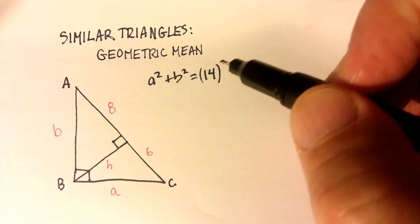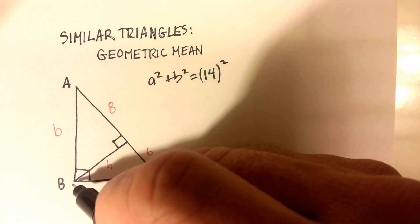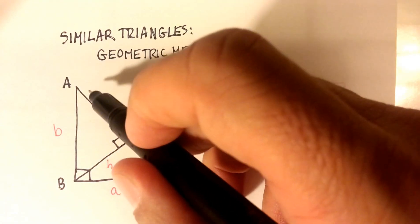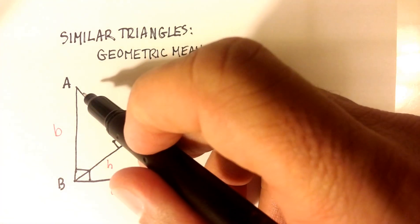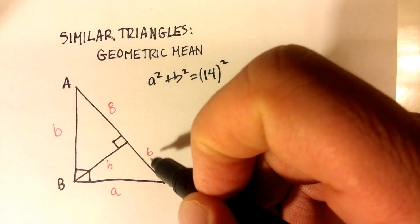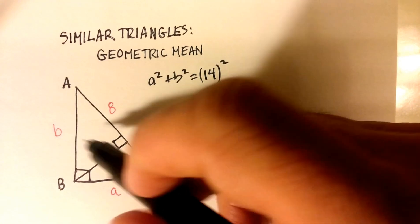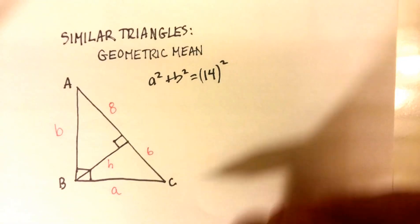So what we're going to do is something called geometric means, and we're going to create similar triangles here. And by making these smaller triangles, we should be able to figure out what the overall lengths are of all these larger ones. Let me show you how that works.